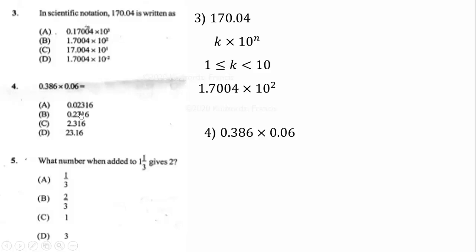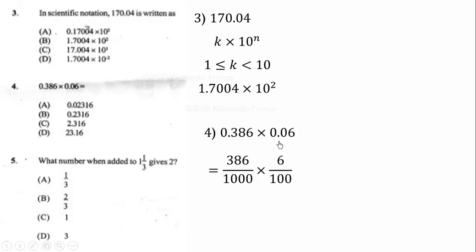The next question asks us to multiply 0.386 by 0.06. We first change these into fraction form: 0.386 equals 386 over 1000, since there are three decimal places, and 0.06 equals 6 over 100, since there are two decimal places. Now we multiply the numerators: 6 times 386 gives us 2316.